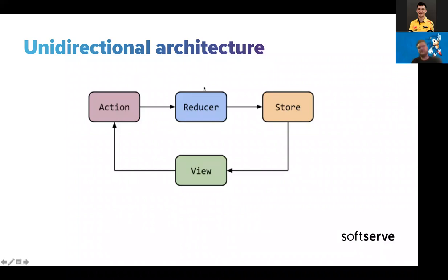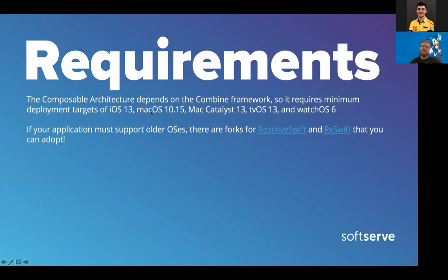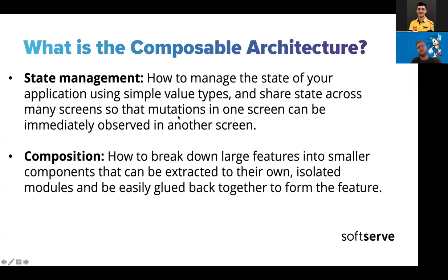So let's go to The Composable Architecture. The Composable Architecture is one example of a unidirectional architecture. Unfortunately it has some limitations — it depends on Combine and SwiftUI, and the deploy target is iOS. Since iOS 15 has been released, I think it shouldn't be an issue for us. It also has feedback from ReactiveSwift and RxSwift, but in this topic we will not cover those. So let's talk about what The Composable Architecture is exactly.